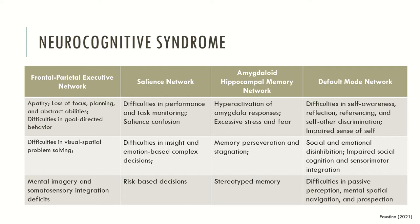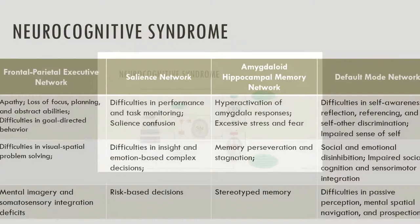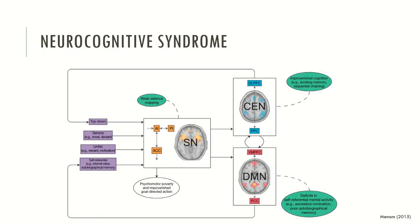The neurocognitive syndrome must have several symptoms that are typically related to these neural networks. We have a model here that helps us understand how the neurocognitive syndrome may be working in the brain. The top-down inputs — including sensory, limbic and self-referential cognition — tend to be processed initially in the salience network. However, problems in weak salience mapping result in impoverished cognition in the dorsal prefrontal cortex and deficits in self-referential mental activity, typically associated with the default mode network.